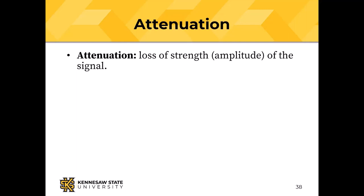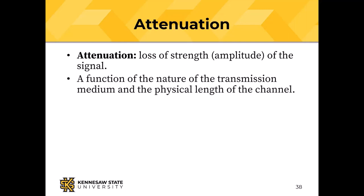Attenuation is loss of signal strength — a decrease in amplitude — as a function of transmission medium and channel length. A flashlight beam sending Morse code works over a long line of sight, but the signal will attenuate before you reach the curvature of the Earth. Sound attenuates even more quickly.